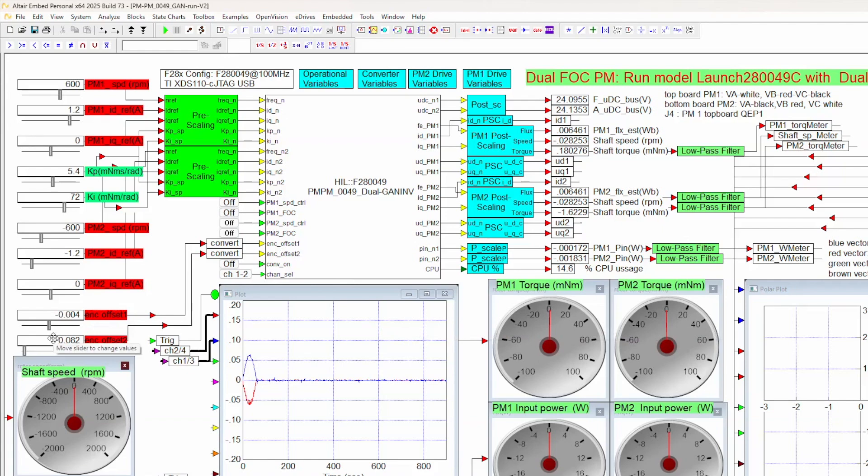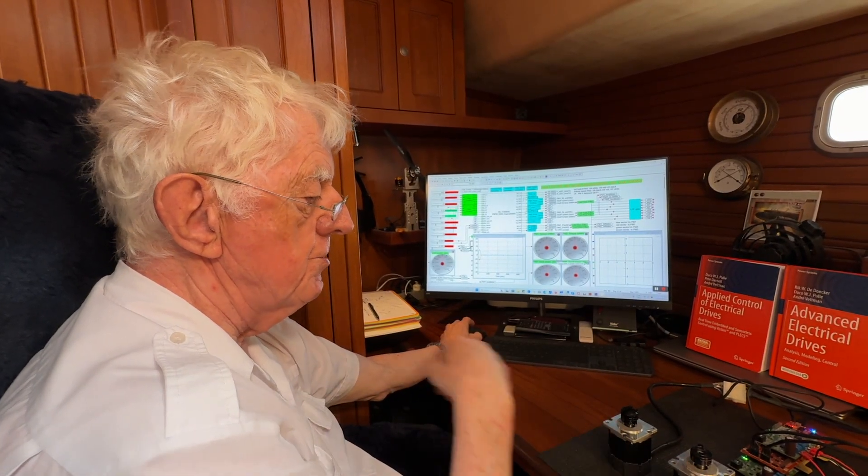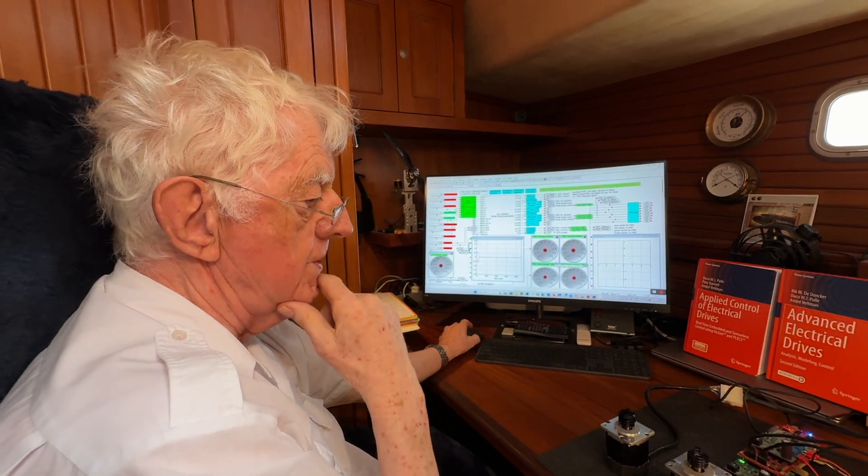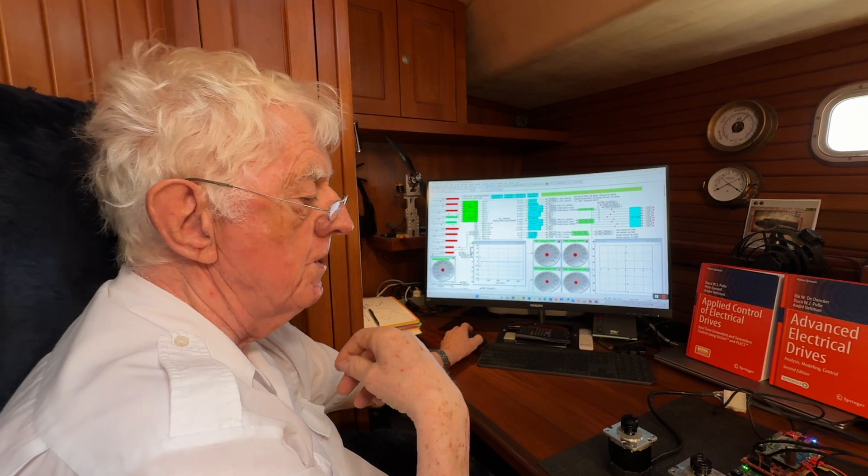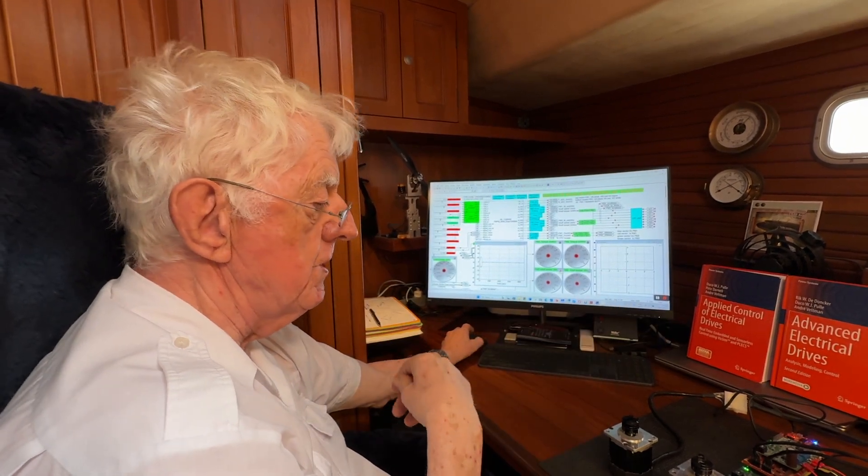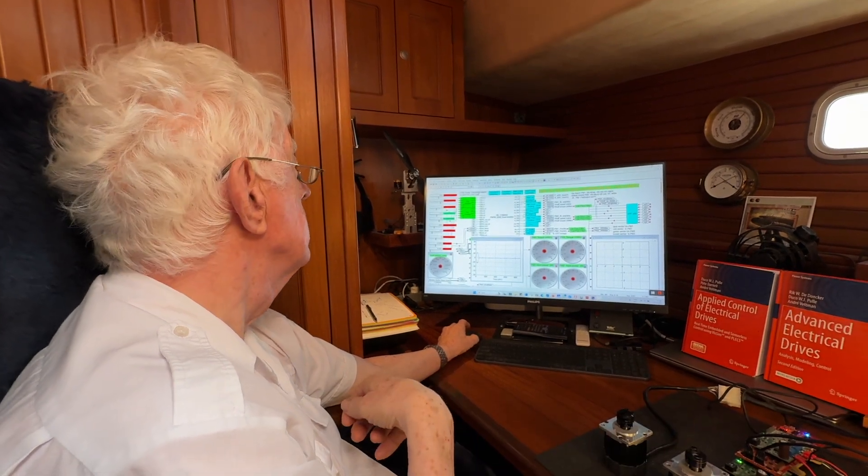And we have an encoder offset. We will use that because we need to tune, we need to lock the D-axis of the controller, each controller, to the flux. We'll show you a way to do that. Our first step is to run this in open loop current control with both machines not connected, then we move on to the next phase, which is to tune the FOC. Then we will run FOC speed control on one and torque control on the other.